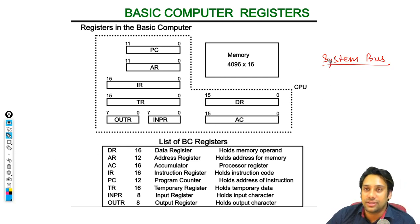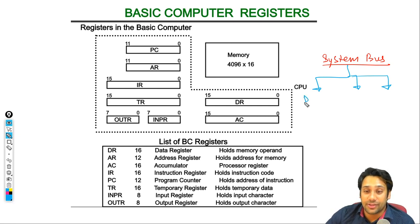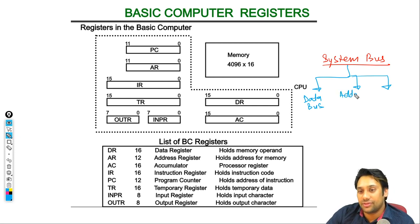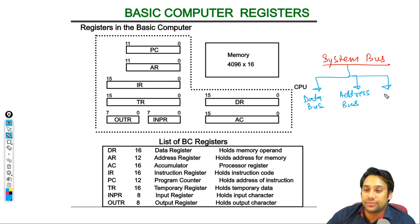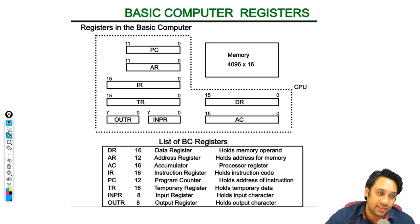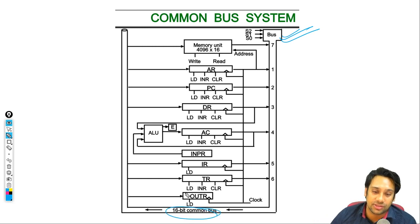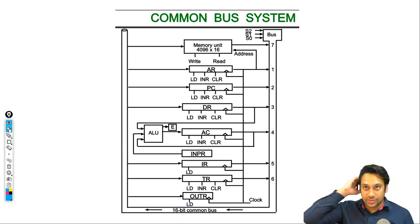The system bus contains three types of buses: the data bus, the address bus, and the control bus. This diagram represents the system bus, which is also called the common bus. We will now see how we can design the system bus.